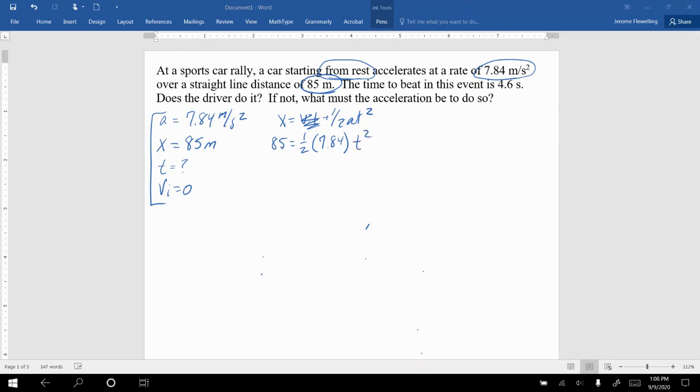So on your calculator, you'll take 85 times 2 and then divide it by 7.84. Then lastly, you're going to square root it in order to find out what that time value is, and it should come out to be 4.66 seconds.